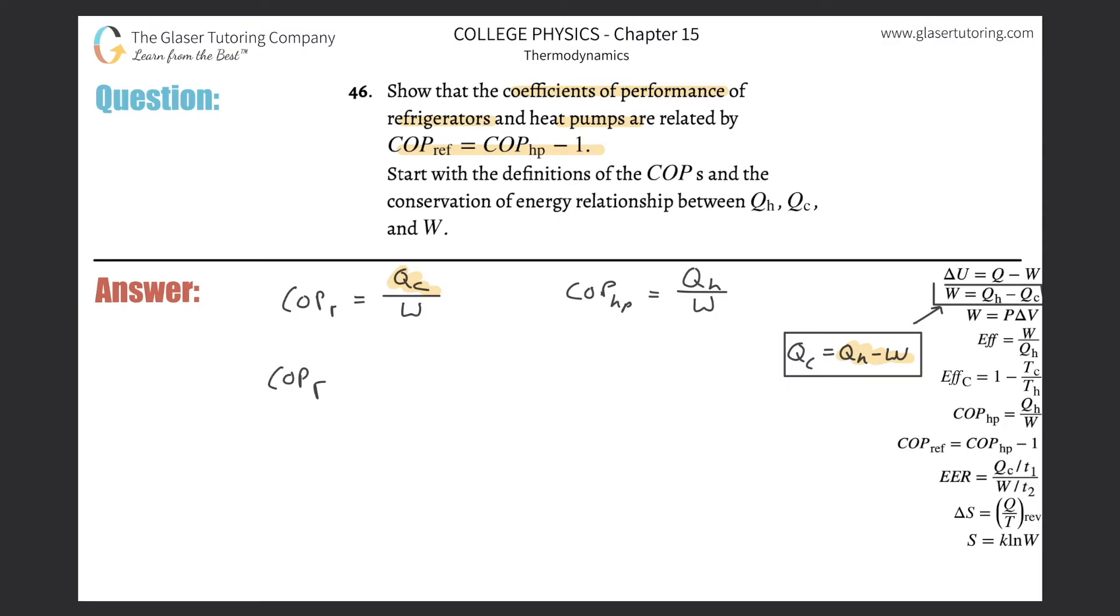Coefficient of performance of that refrigerator now. The reason why I'm doing this is because I noticed that in my formula up here, I have coefficient of performance for the refrigerator on the left-hand side, and I'm trying to build off of that. So now there's going to be Q sub H minus the work divided by the work.